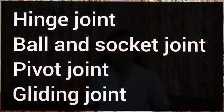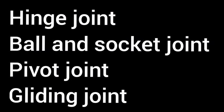Different joints allow different types of movement. Only the joints in the skull do not move. The bones in the skull are not movable — the only movable bone in the skull is the lower jaw bone. So there are different kinds of movable joints in our body: hinge joint, ball and socket joint, pivot joint, and gliding joint.